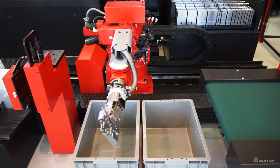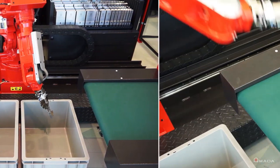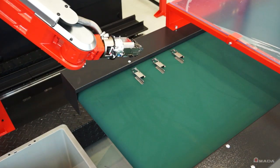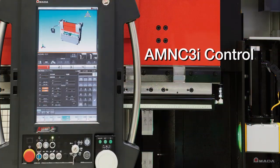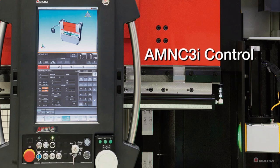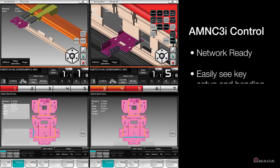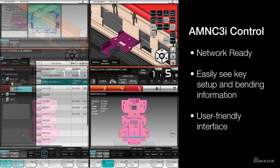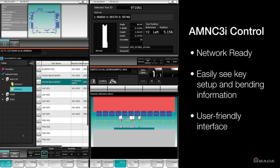Once the robot finishes bending a part, it can be programmed to place them in a dropbox or on a pass-through conveyor belt. All of the innovative features on the EGAR are controlled through its touchscreen AMNC3i control. It's network ready and can retrieve programs from your company's network. All of the setup, tooling, and bend sequence information is displayed on a user-friendly graphical interface.